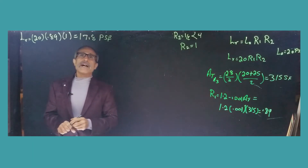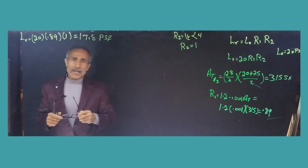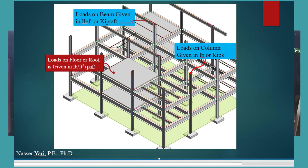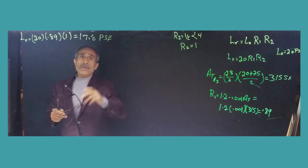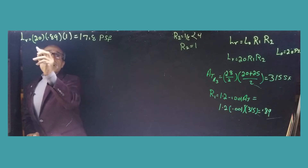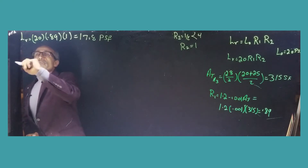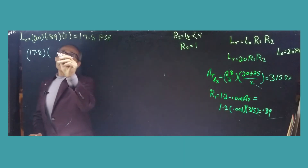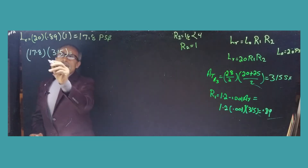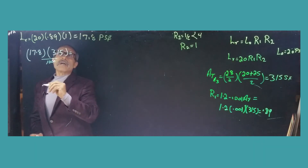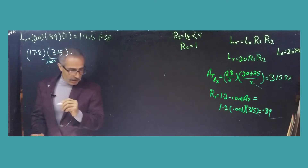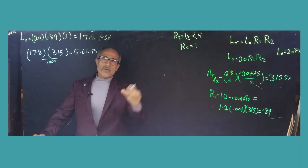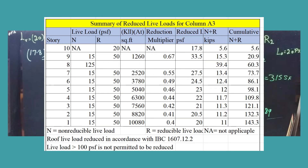That's the load intensity, but since we're dealing with a column, the load must be expressed in kips. The column load is load intensity times tributary area divided by 1,000: 17.8 × 315 / 1,000 = 5.6 kips. That's the live load the column carries from the roof — the 10th floor — and you can see that as the top row in my spreadsheet.